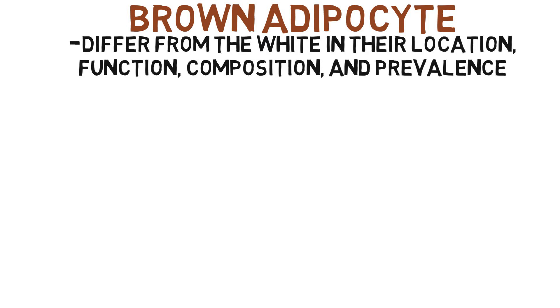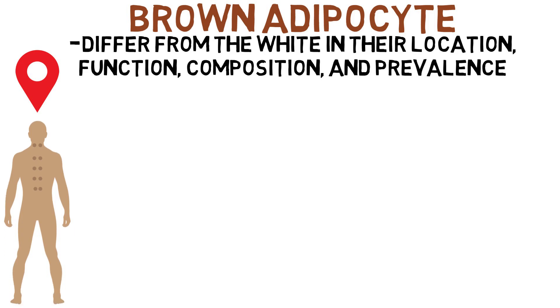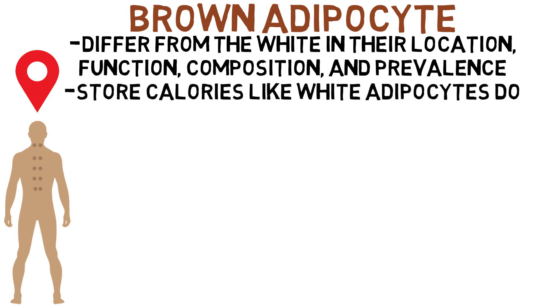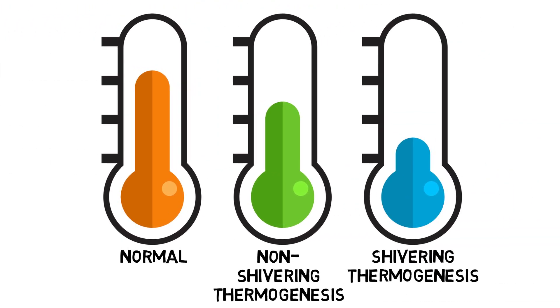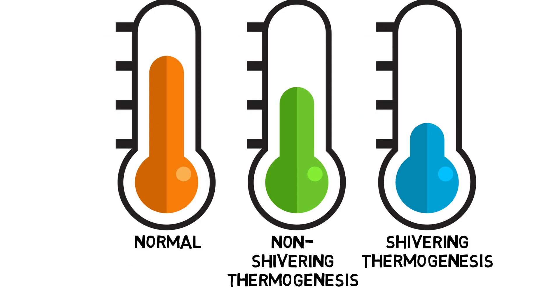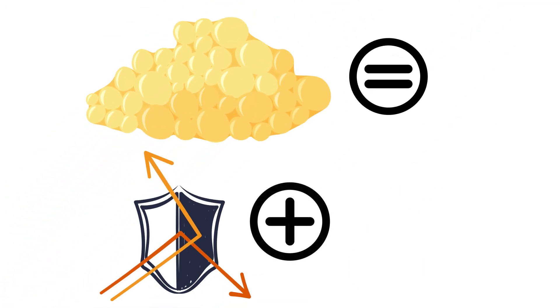Next we have brown adipocytes. These differ from the white in all sorts of ways, most notably in their location, function, composition, and prevalence. While white adipocytes are found all over the body, brown adipocytes are mainly located around the neck and by the spine. Their function: brown adipocytes store calories like the white do, but not for future energy regulation — rather, they use them to heat up your body if your temperature falls into a zone known as non-shivering thermogenesis, which precedes the shivering temperature point. So besides fat serving as an insulator to keep you warm, it can do so by burning calories as well.